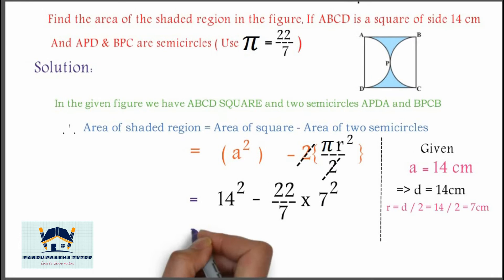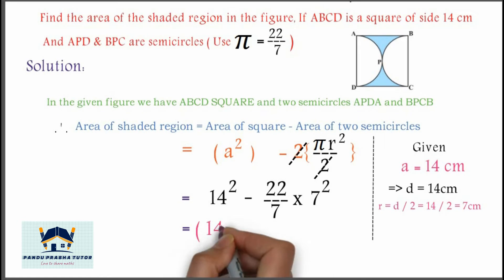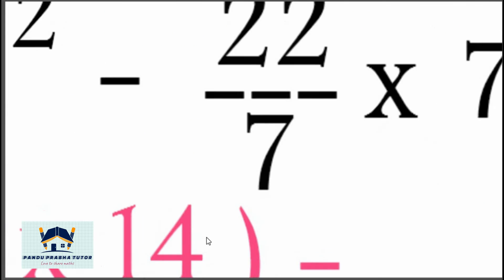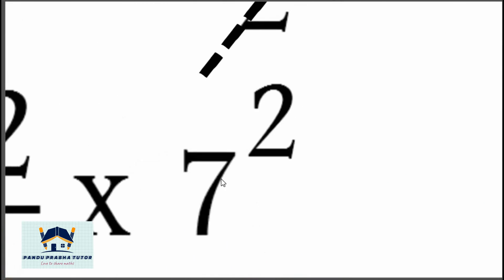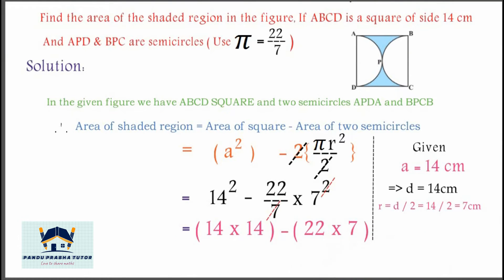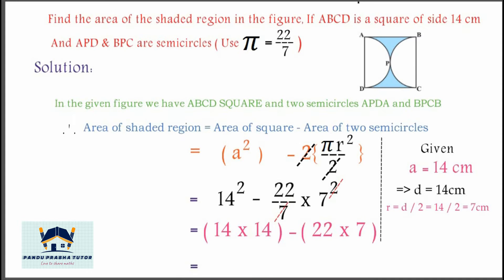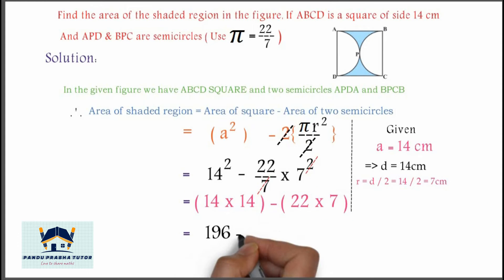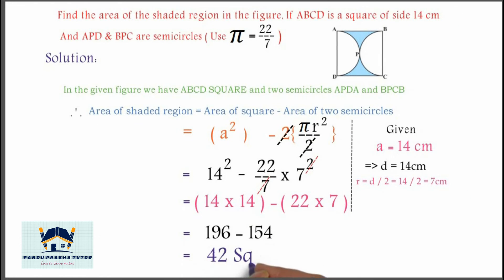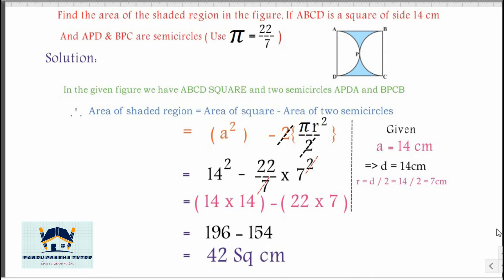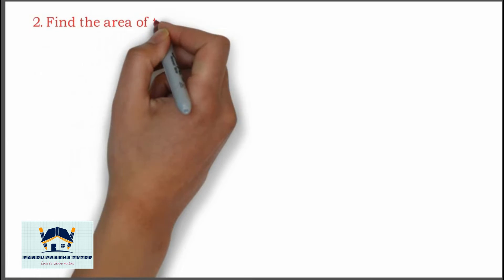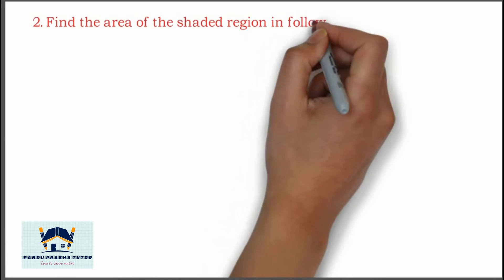14 squared is 14 into 14, minus — 7 gets cancelled — 7 squared means 7 into 7, once the 7 cancels dividing 22 into 7. This gives 196 minus 154, which is equal to 42 square centimeters.